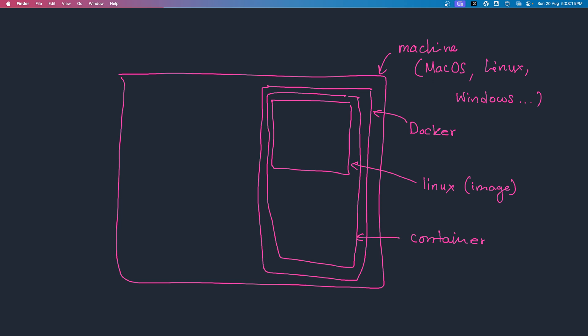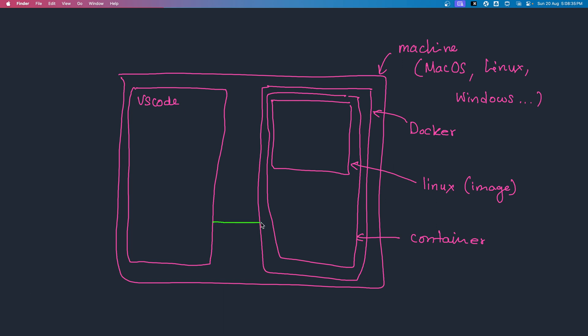So the container essentially consumes the image, and we can work with the container. And then on the side, we'll also install VS Code. That's because we would want to connect with the container and explore the files inside of it and work with them. So VS Code will essentially enable us to connect with the container. That's the idea.